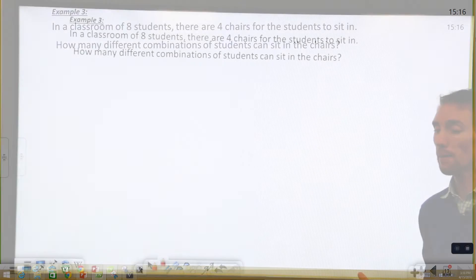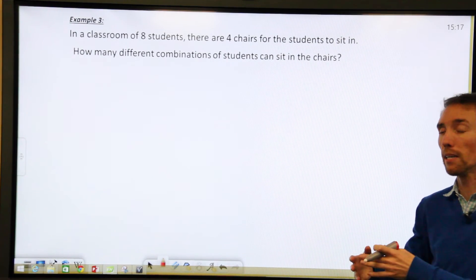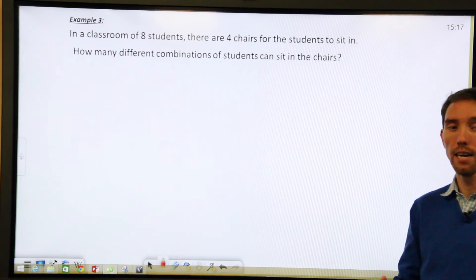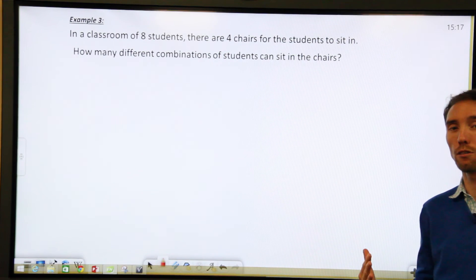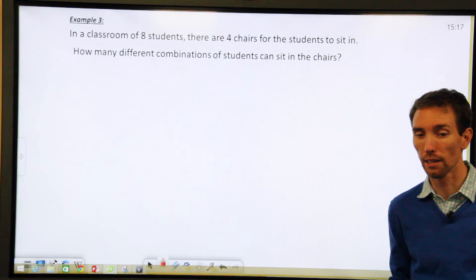So this one's a little bit different because you're not creating outcomes based on different categories so to speak. You're saying that there's a certain number of students and a certain number of chairs and how many different ways can you sit those students in the chairs. Well obviously not all eight students are going to fit into four chairs.